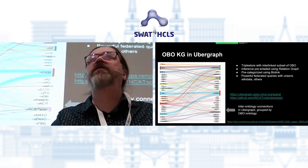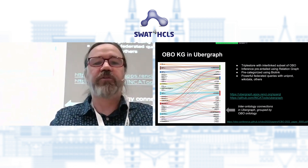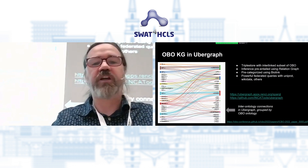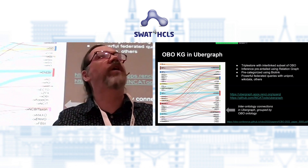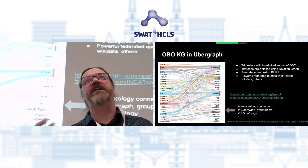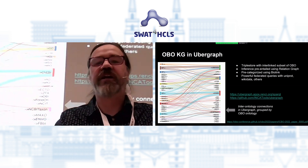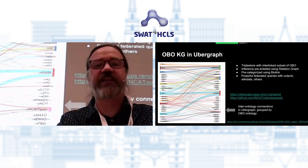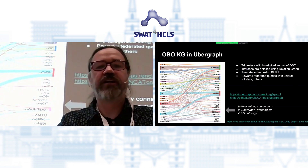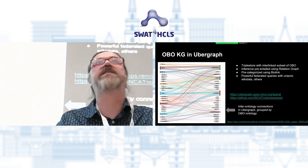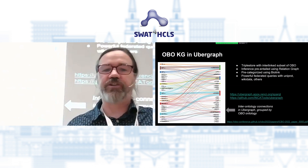Triple stores are another great way to query this data. We've deployed a new triple store — led by Jim Balhoff of Renzi — called UberGraph. This brings together a subset of the OBO ontologies that are designed to work well together. We make use of reasoning to build this graph, using a technique called relation graph to pre-compute all transitive entailed relationships between concepts. This makes it much easier to launch queries like: find me all genes that participate in a reaction that involves some kind of polysaccharide or glucan. You can do powerful queries using this simplified relational graph model and do federated queries with other triple stores.